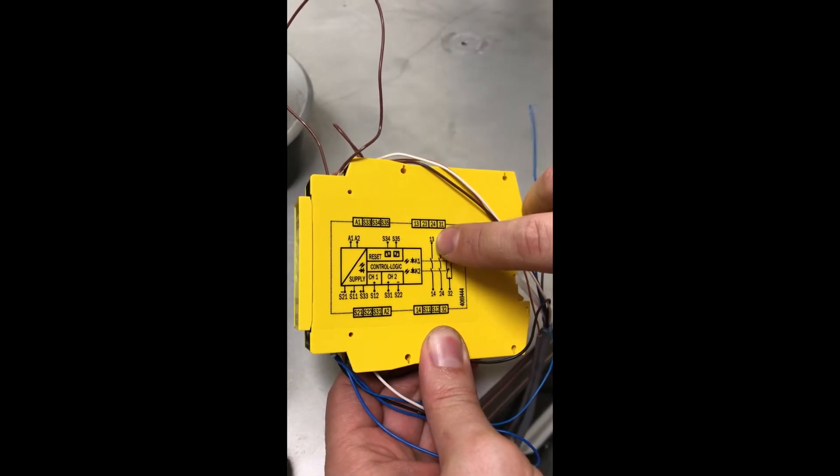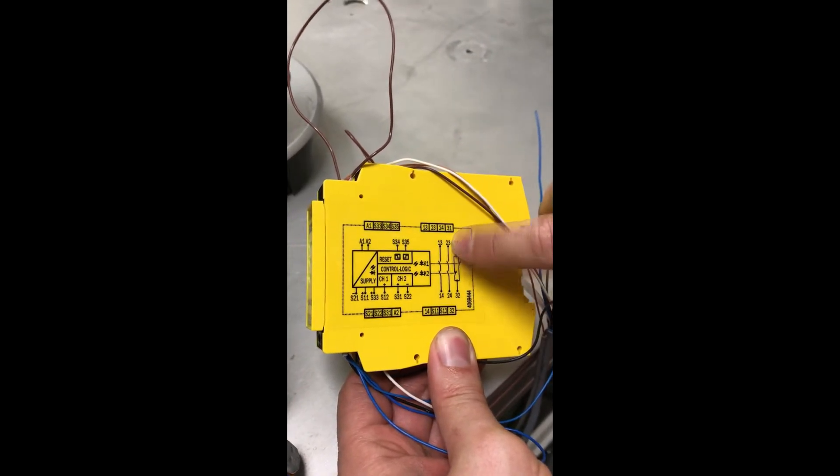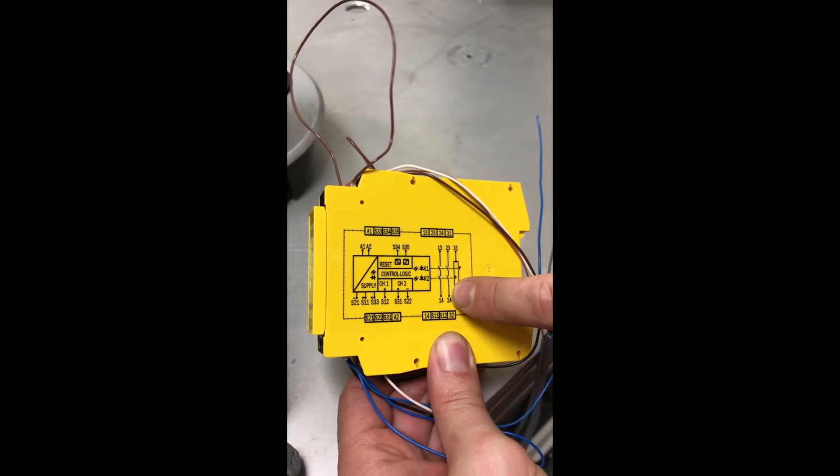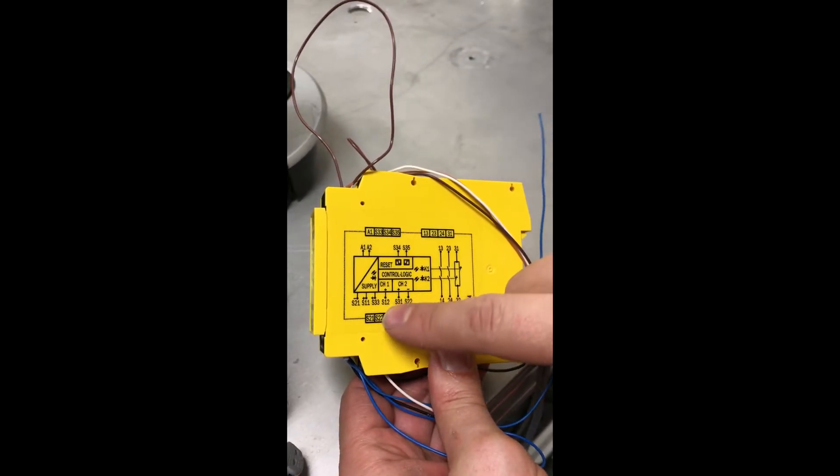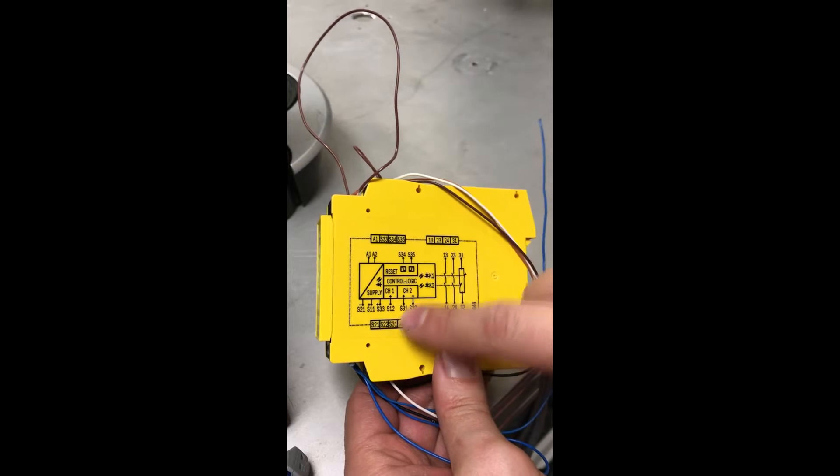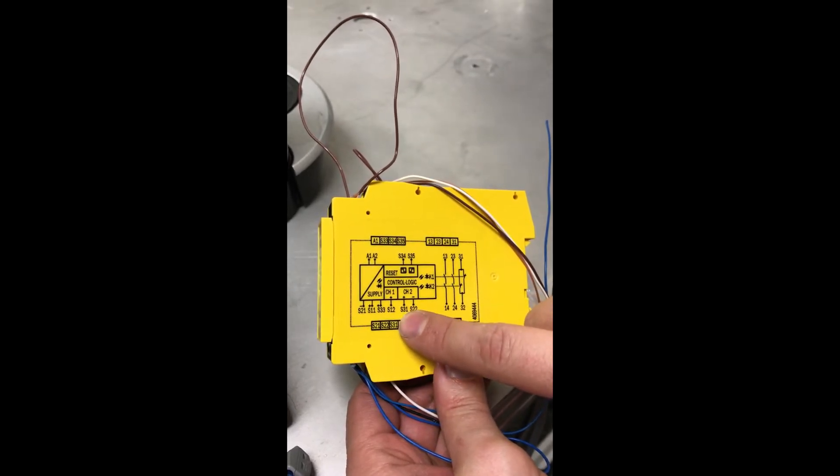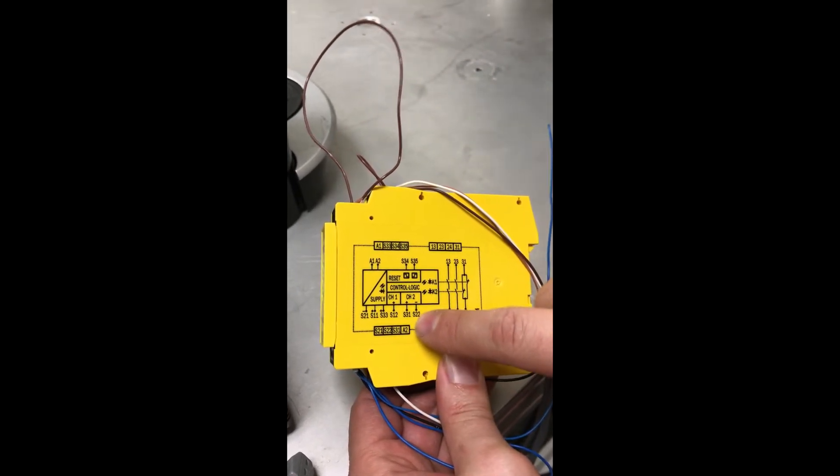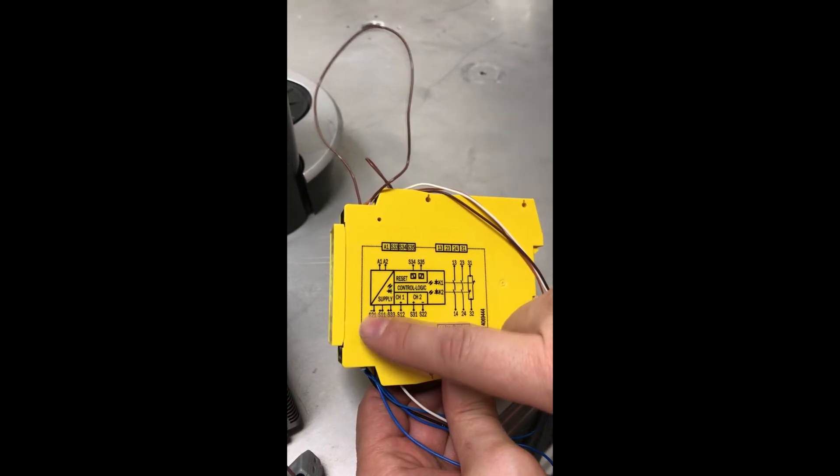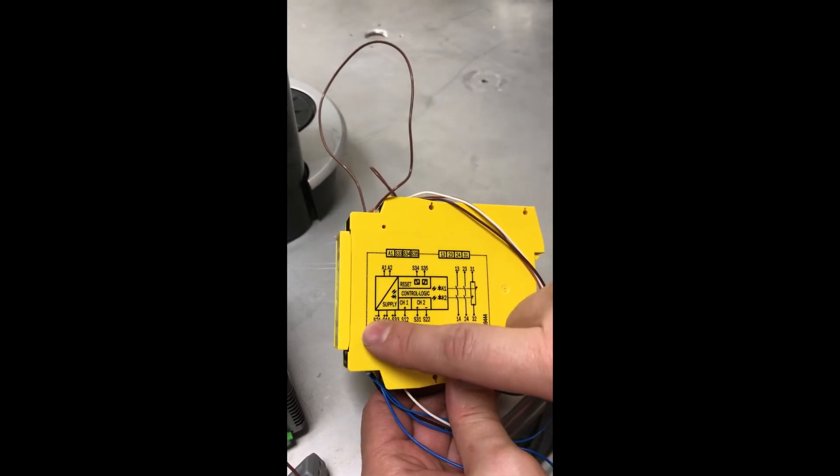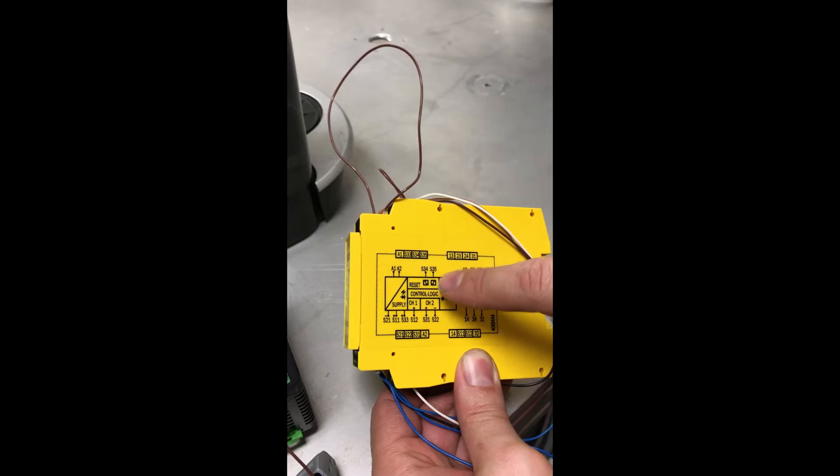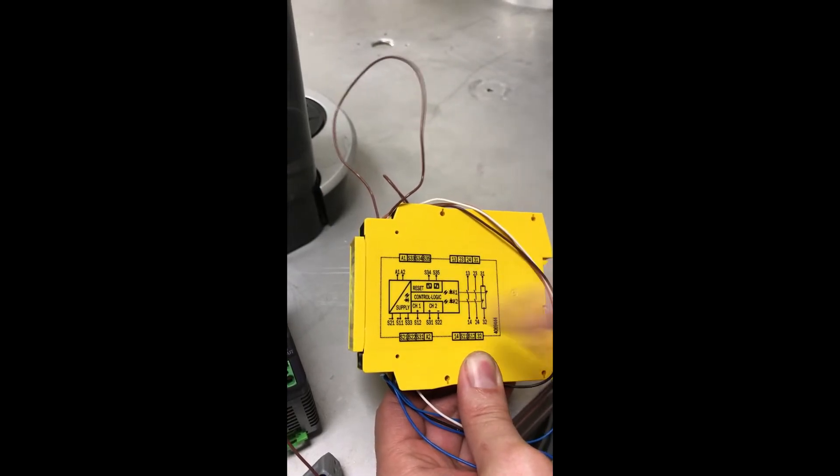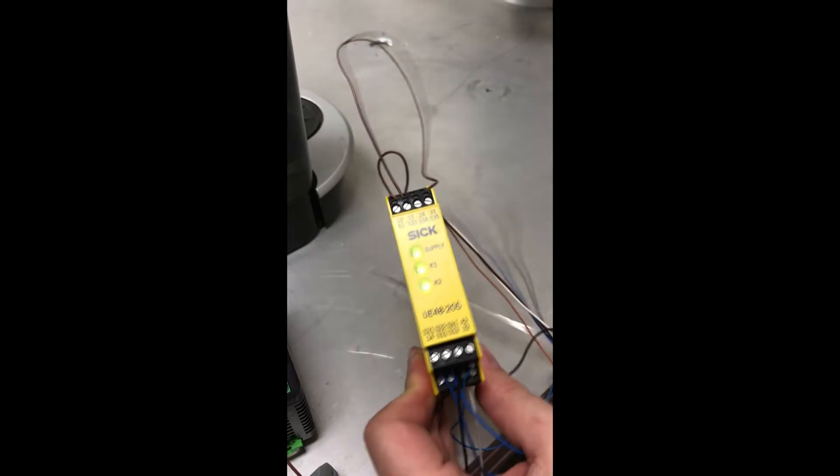The safety circuit for the universal robot runs through 13 to 14 and 23 to 24. It's a dual channel safety. The light curtains are tied in on channel 1 S12 and channel 2 S31 with a connection between S22 to S21 to complete the safety circuit, and then we've wired S33 to S35 as an automatic reset for the safety.